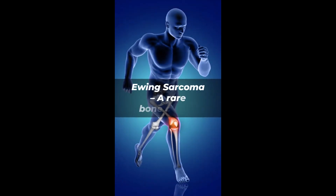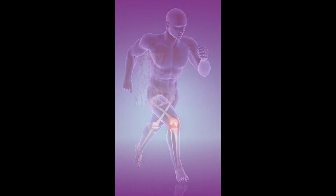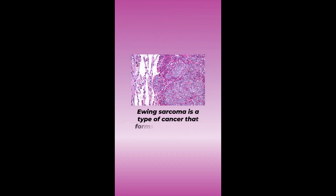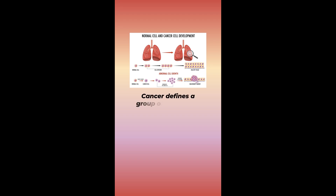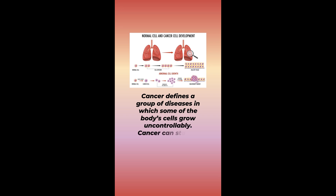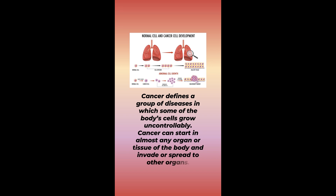Ewing sarcoma is a rare bone cancer. It is a type of cancer that forms in bone or soft tissue. Cancer defines a group of diseases in which some of the body's cells grow uncontrollably. Cancer can start in almost any organ or tissue of the body and invade or spread to other organs.